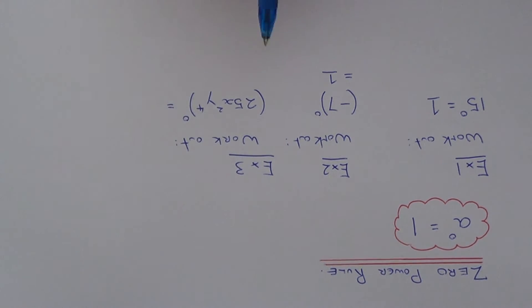So final example then, we've got this expression, twenty-five x squared y to the power of four in a bracket to the power of zero. So again, no matter how difficult it looks, if we have power of zero, the answer is always going to be one.